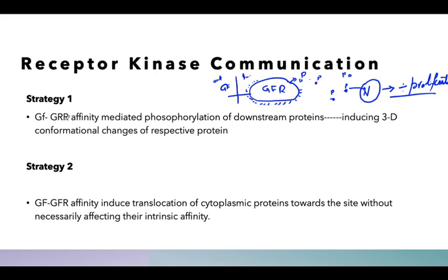So, strategy one proposes that growth factor receptor affinity-mediated phosphorylation of downstream proteins induces a 3D conformational change of the respective proteins. These different proteins have their stereochemistry changed and they communicate this message to the nucleus.